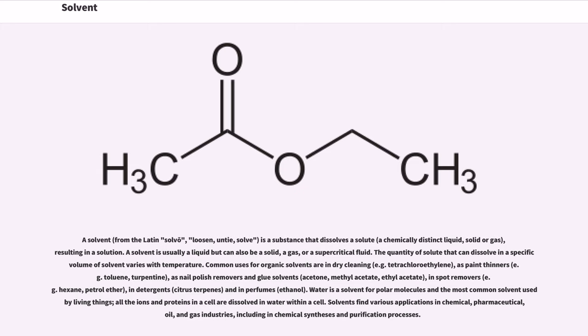Common uses for organic solvents are in dry cleaning, for example tetrachloroethylene, as paint thinners, for example toluene, turpentine, as nail polish removers and glue solvents, acetone, methyl acetate, ethyl acetate, in spot removers, for example hexane, petrol ether, in detergents, citrus terpenes, and in perfumes, ethanol.